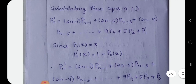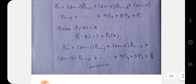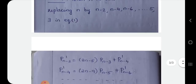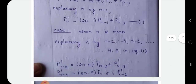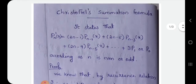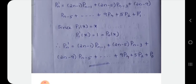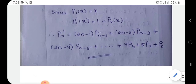If we write P1 of x, then x. Then P1' of x is equal to 1. P0' of x is equal to 0. The last term is P0' of x. This is Christopher's formula: when n is even the last term is 3P1, and when n is odd the last term is P0. This completes the proof.